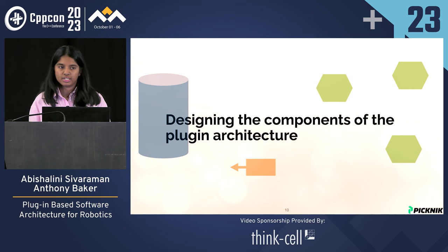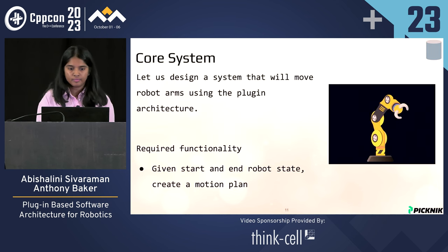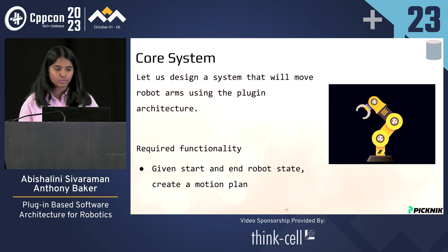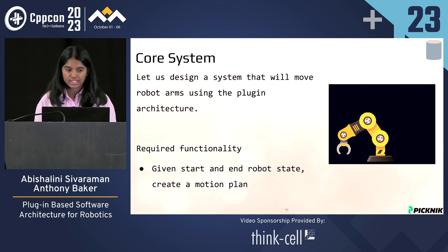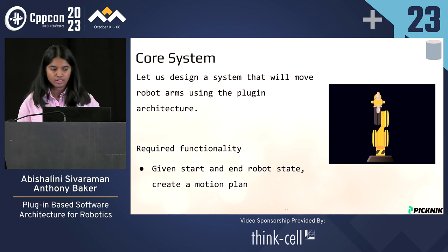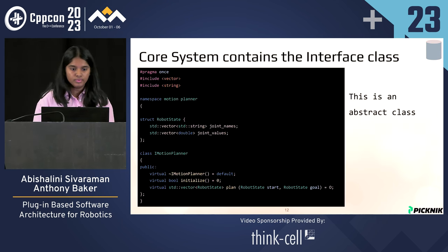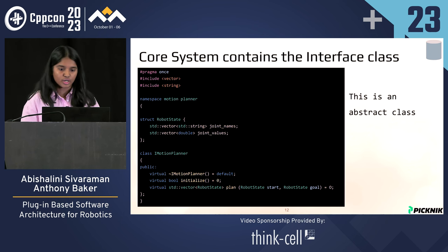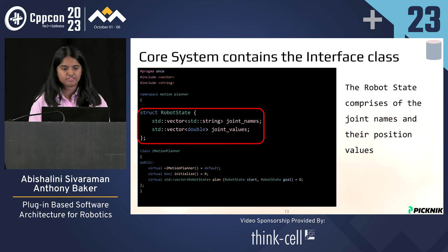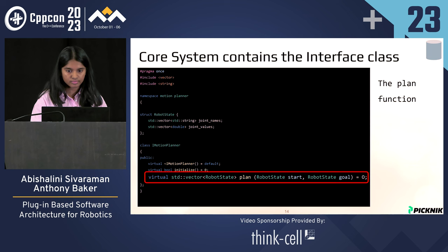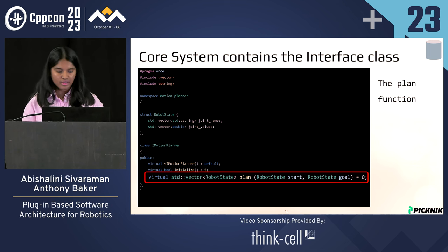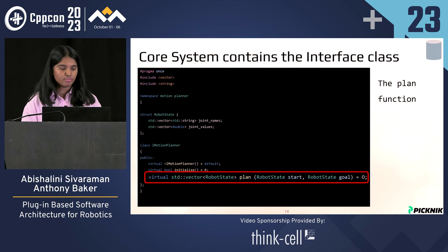Now let's design a simplified plugin architecture. Consider this core system: let's design a system that will move robotic arms using a plugin-based system. The required functionality is — given a start and end robot state — we need to create a motion plan. The robot state comprises joint names and their position values. The main function is the plan function, which takes in a start state and an end state and gives you back a vector of robot states.